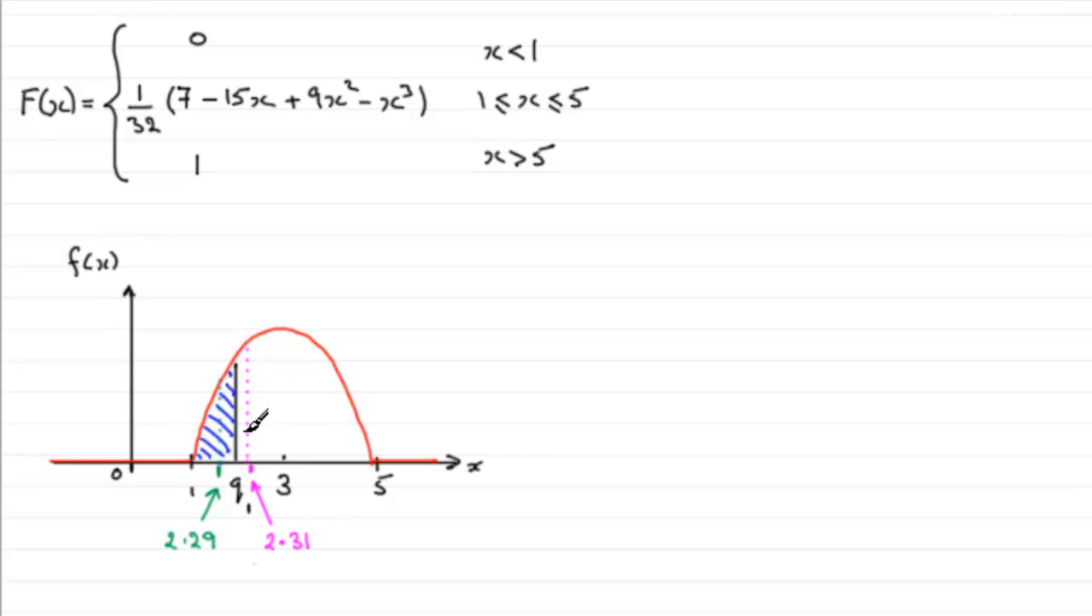And you can see that I've put Q1 on our sketch of the probability density function, f of x. We know that the probability of being less than Q1 has got to be 0.25—25% of the values, remember, are less than the lower quartile.